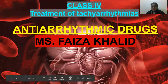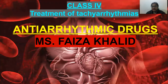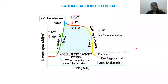Now we are going to talk about Class 4, which is the treatment of tachyarrhythmias. Earlier we talked about Class 2, which was focusing on beta blockers, and now we are discussing Class 4.